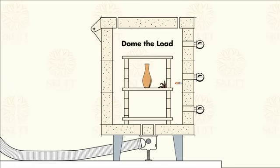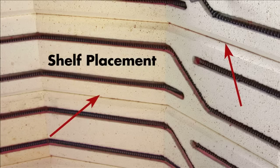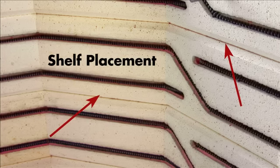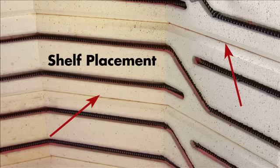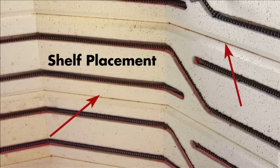If you are firing both tall and flat pieces, you will want to do what we call dome the load, where the tall pieces are in the center and the flat pieces are around the perimeter. Try to load the shelves above or below the element grooves to prevent from blocking this radiation. Also make sure that each area between shelves has exposure to at least one element.